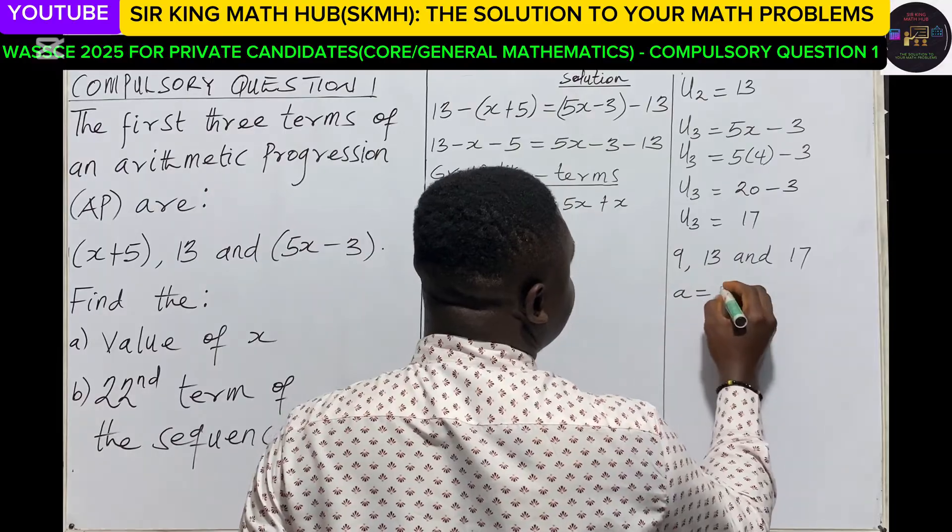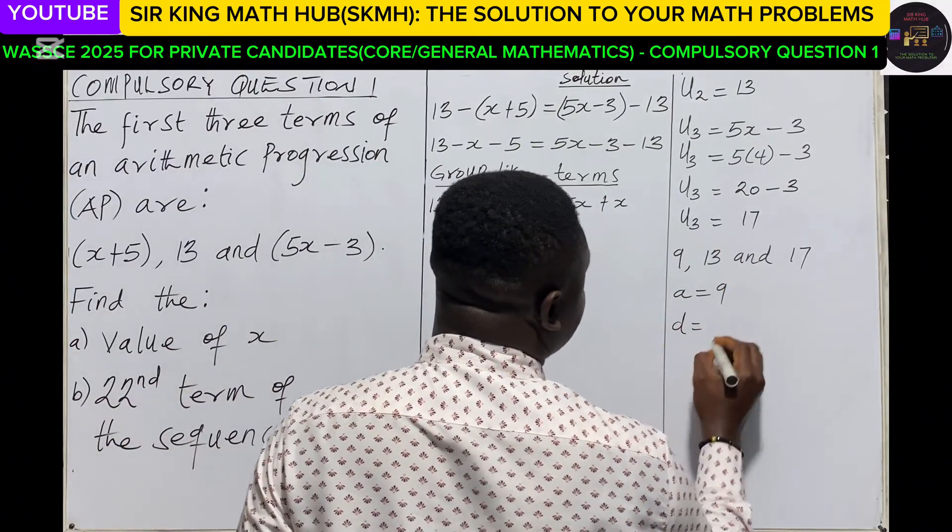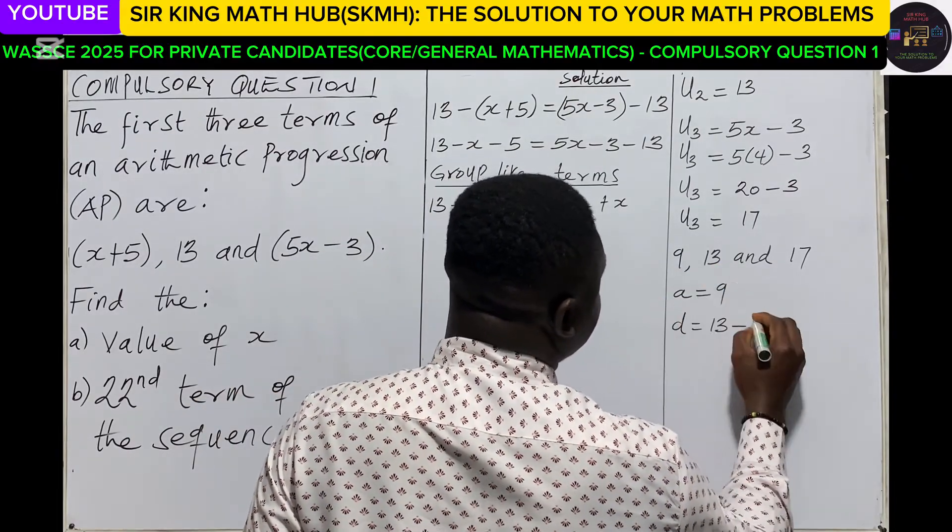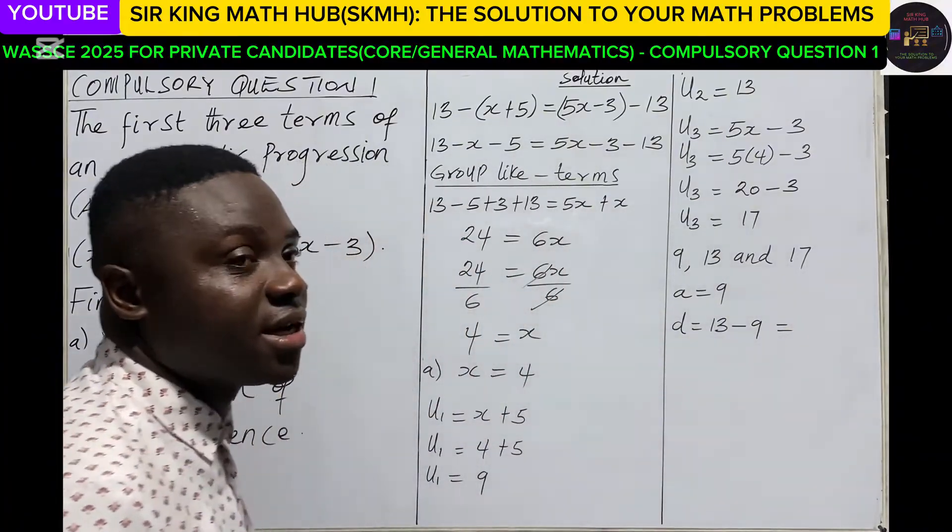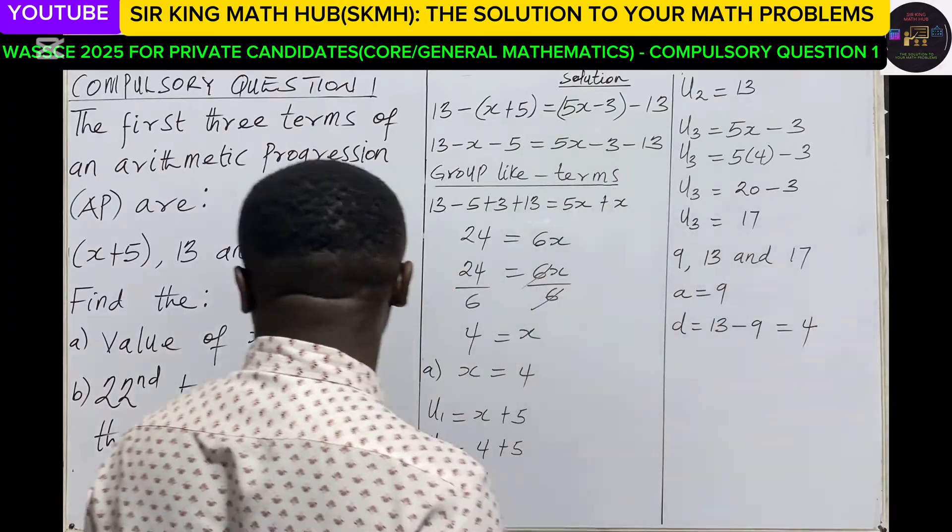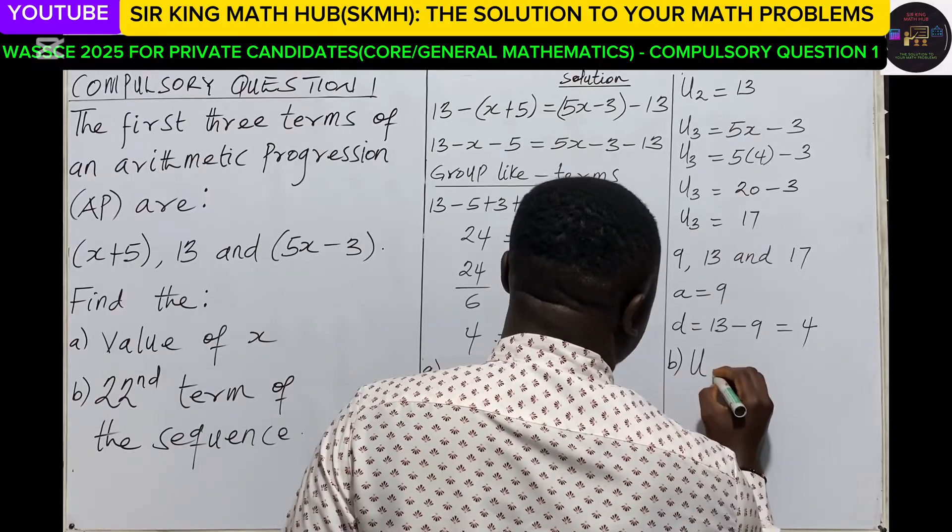With this we know our first term is 9. Now what is the common difference? The common difference, we can pick the second term minus the first term: 13 minus 9, that is also 4.